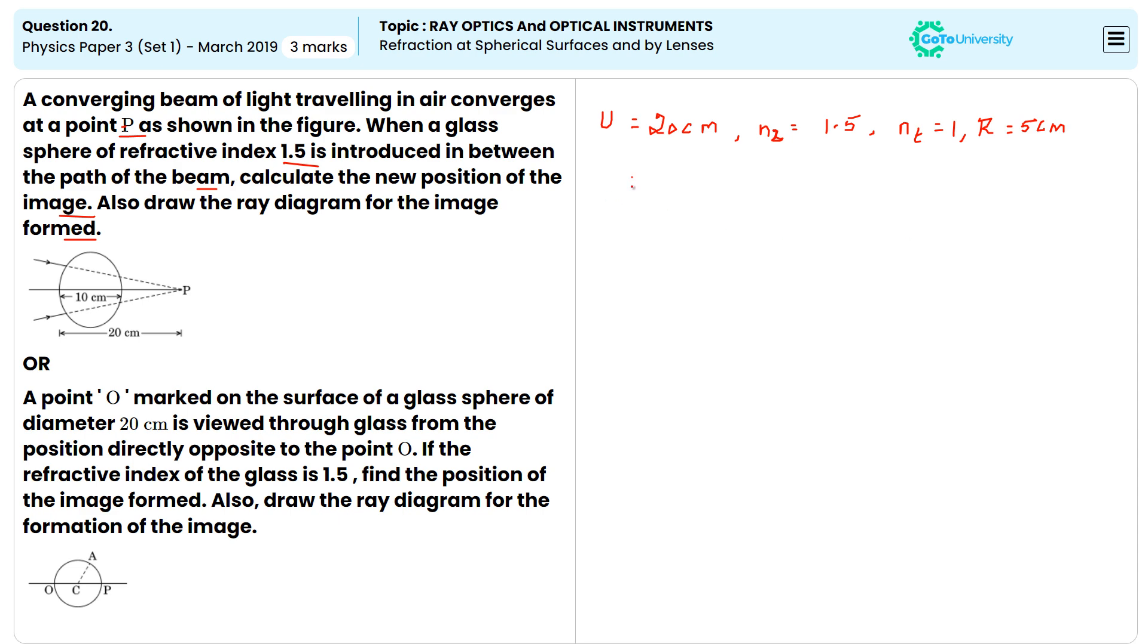Now, using the formula, we know that N2 by V minus N1 by U equals N2 minus N1 divided by R. Then we can substitute the values: 1.5 divided by V minus 1 by 20 equals 1.5 minus 1 divided by 5.